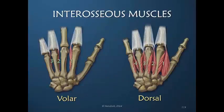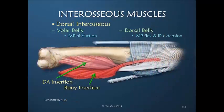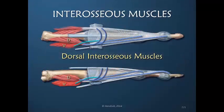What about abduction and adduction? We know that the dorsal interosseous muscles abduct and the volar interosseous muscles adduct. We've talked about how the dorsal interosseous muscles have bony insertions and the volar interosseous muscles do not. We've also discussed the dorsal and volar bellies of the dorsal interosseous muscles, and how there is a bony insertion of the volar belly that can be considered a pure abductor. We've looked at this drawing which shows that the volar belly has less influence than the dorsal belly, but can nevertheless be considered a pure abductor.